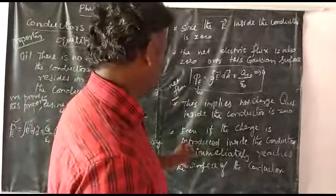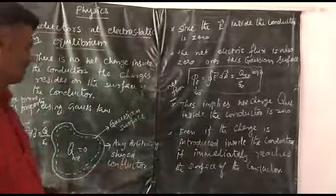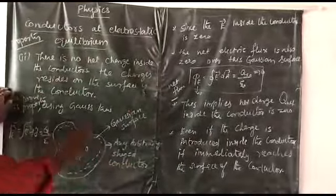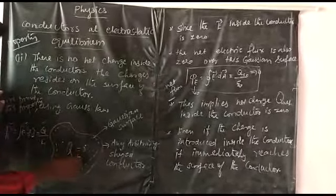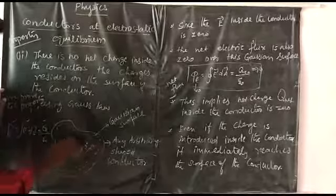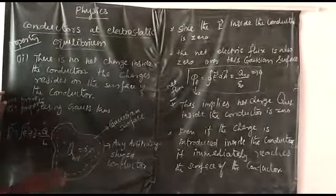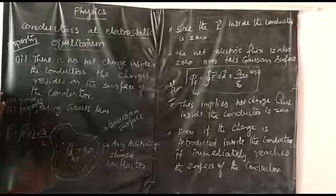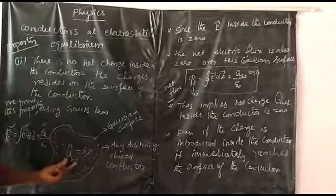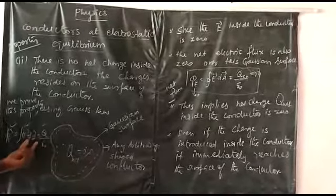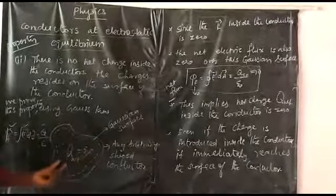Even if a charge is introduced inside the conductor, it immediately reaches the surface of the conductor. Charges can be transferred from inside the conductor to the surface of the conductor. Therefore, there is no net charge present inside the conductor — the net charge inside is zero due to the electric field being zero and the flux through the Gaussian surface being zero.